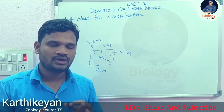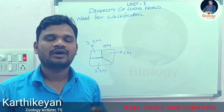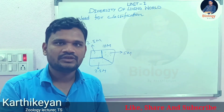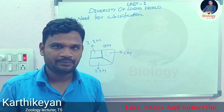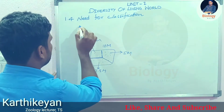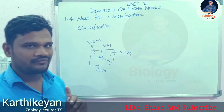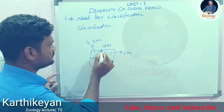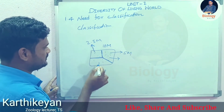That is the need for classification. We have millions of organisms, so we have to classify them into groups based on their characteristics — either external or internal. That process of dividing organisms into groups is known as classification. We give names to those particular groups; for example, this group is known as animals, this group is known as plants, and this group is known as microorganisms.